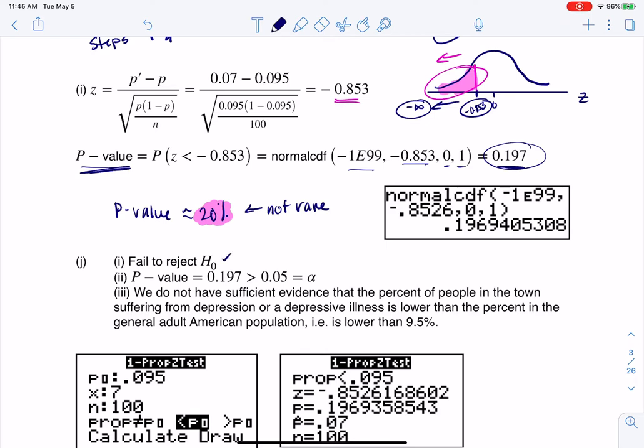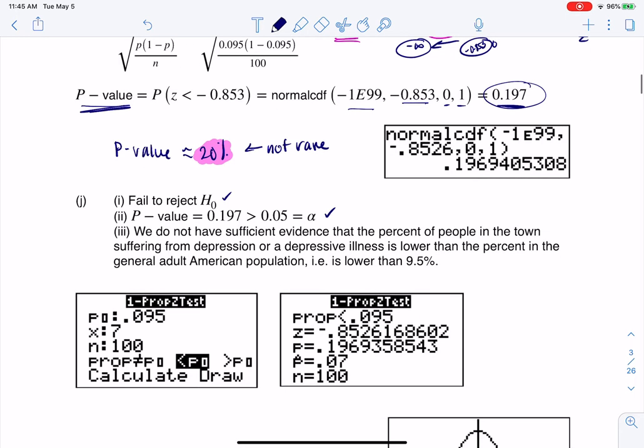So I'm going to fail to reject the null. All right. And the reason for my decision is because my p-value is greater than alpha. And here we are saying, I don't have sufficient evidence that the proportion or the true proportion of people in this town suffering from depression is lower than the percent of the general American population.